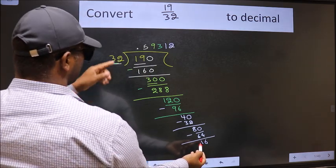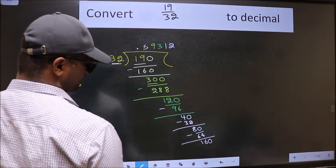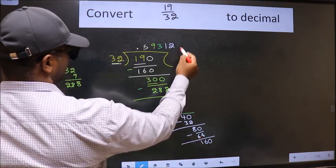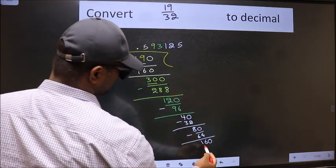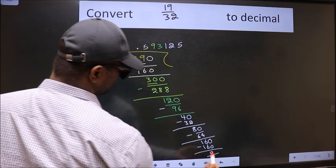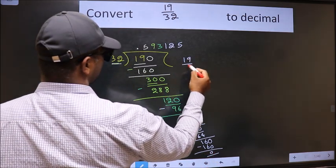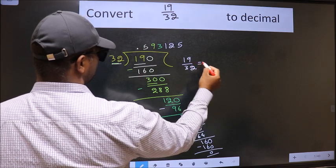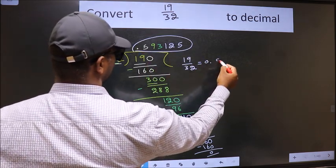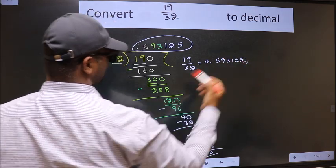16 is smaller than 32 and we already have the decimal, so directly take 0. So 160. When do we get 160 in the 32 table? 32 fives: 160. Now we subtract and we get 0. Therefore, the decimal of 19 by 32 is 0.593125.